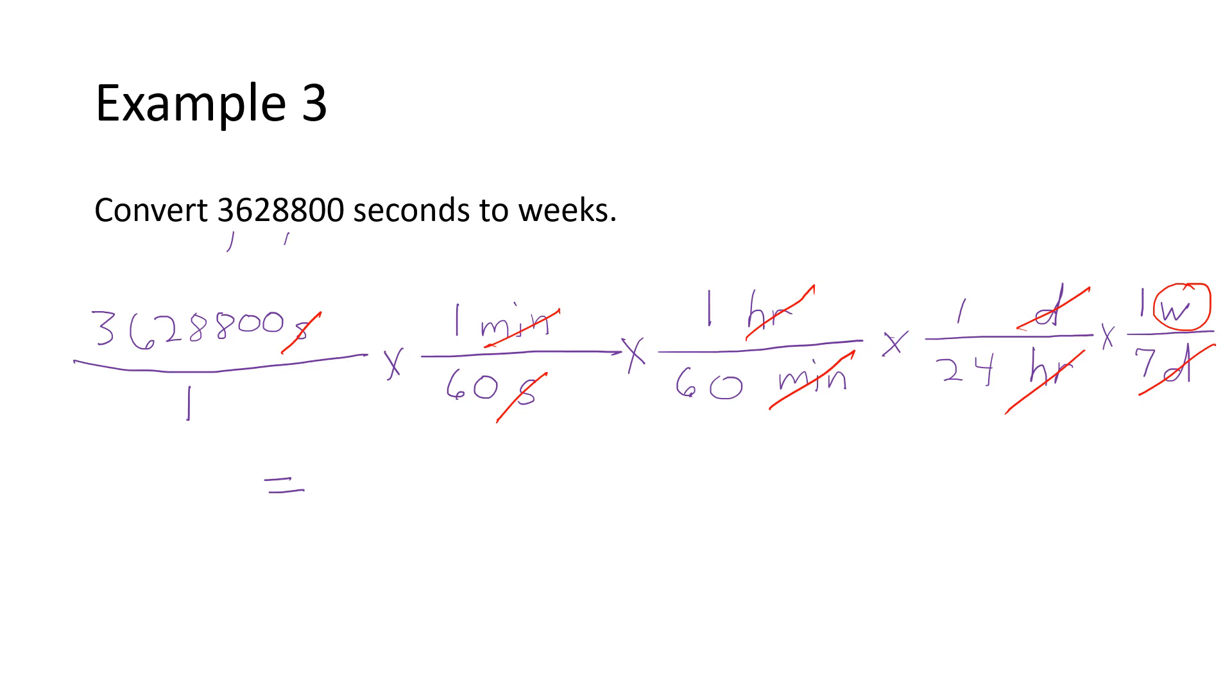The times key tells the calculator something's in the top, or just plain entering it to begin with tells the calculator this is in the top. The divide key says it's in the bottom. So I'm going to take 3,628,800, divided by 60, then divided by 60 again, divided by 24, and then divided by seven. And that gives me a final answer of six weeks. Six weeks is equivalent to that many seconds.